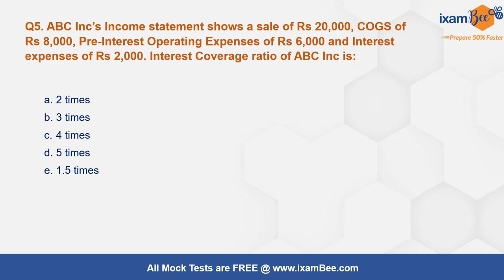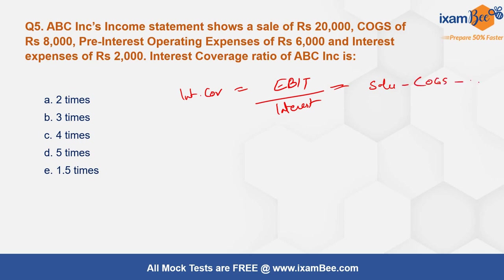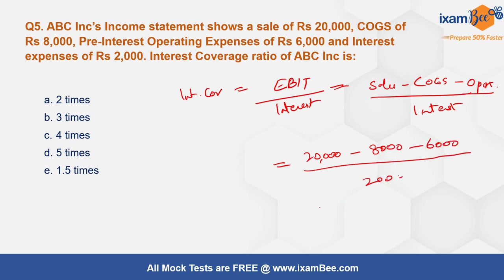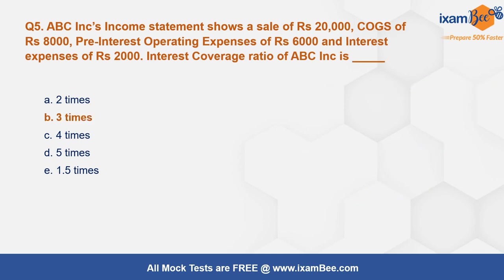Next question: ABC Inc's income statement shows sales of ₹20,000, COGS of ₹8,000, pre-interest operating expenses of ₹6,000, and interest expense of ₹2,000. What is the interest coverage ratio? Interest coverage ratio is EBIT divided by interest expense. EBIT is calculated as sales minus COGS minus operating expenses, without subtracting interest. So EBIT equals 20,000 minus 8,000 minus 6,000 equals 6,000. Divided by interest of 2,000, the answer is 3 times. The company is earning three times its interest expenses and is in a good position to service interest.